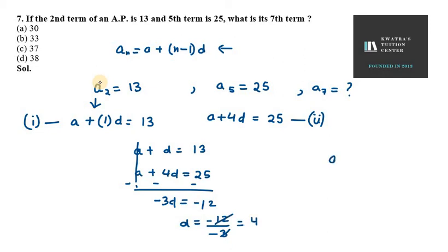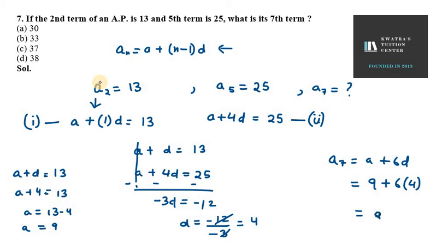Now we need to find A7. A7 can be written as a plus 6d with the help of AN value again. So in this case, we need to find a first using equation number 1. So we have a plus d equals 13, d as 4. So we get a as 13 minus 4 which is 9. A is 9. That means first term is 9 there. Plus 6d, d is 4, so 6 into 4 is 24. 24 plus 9 is 9 plus 24 will give us 33.